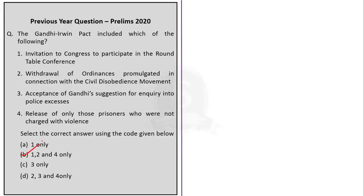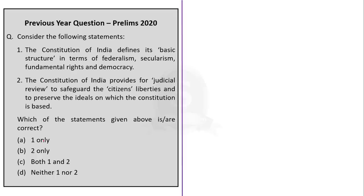There is a way we can cross-check this answer. We can take up the third statement: Acceptance of Gandhi's suggestion for enquiry into police excesses. When it comes to the Gandhi-Irwin Pact, there were two suggestions which were rejected by Viceroy Irwin. The first was demand for public enquiry into police excesses and the second was commutation of death sentences of Bhagat Singh, Sukhdev and Rajguru. So statement 3 is wrong, and we have eliminated options C and D which contain statement 3.